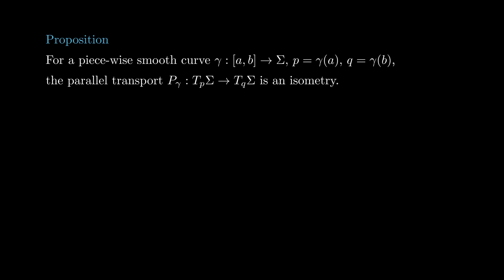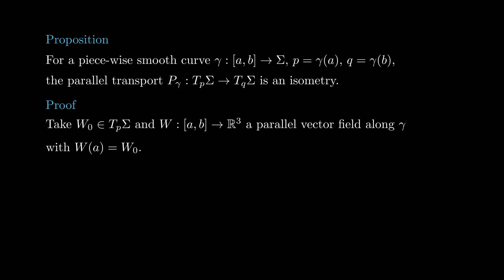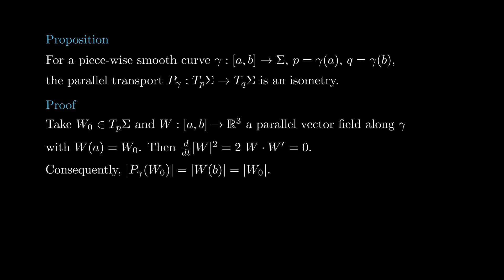Next we prove that the parallel transport is an isometry. This proof turns out to be extremely simple. Take w0 in TpSigma and consider the parallel vector field w that begins at w0. By the product rule, the derivative of its length squared is given by 2 times the dot product between w and its derivative w'. Since the covariant derivative of w is 0, this means that w' is perpendicular to the surface, in particular perpendicular to w, meaning that this dot product is 0. This computation implies that the length of w is independent of time, implying that the parallel transport is an isometry.